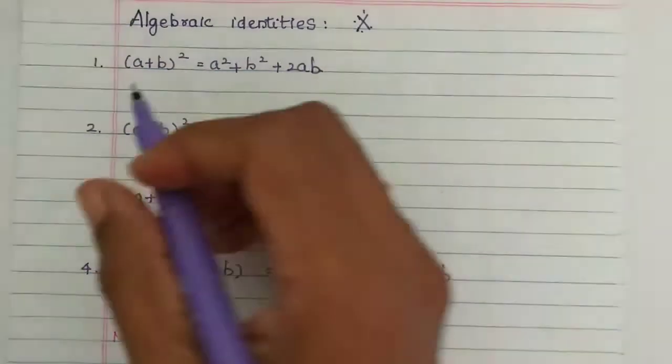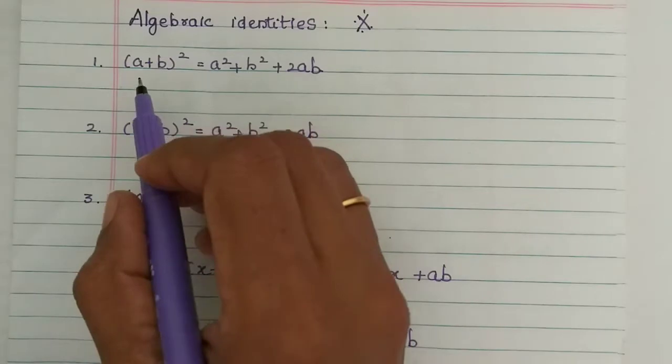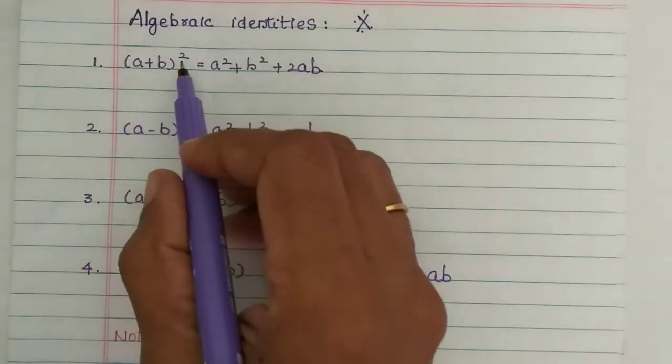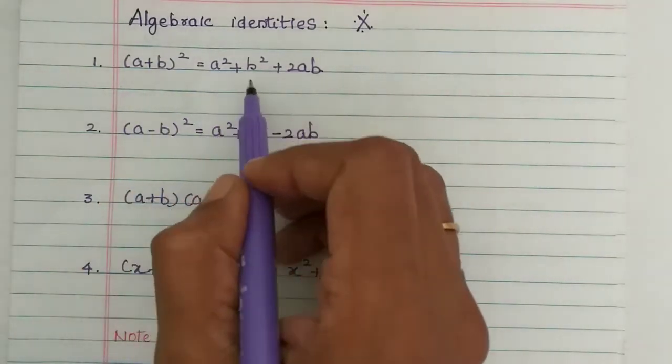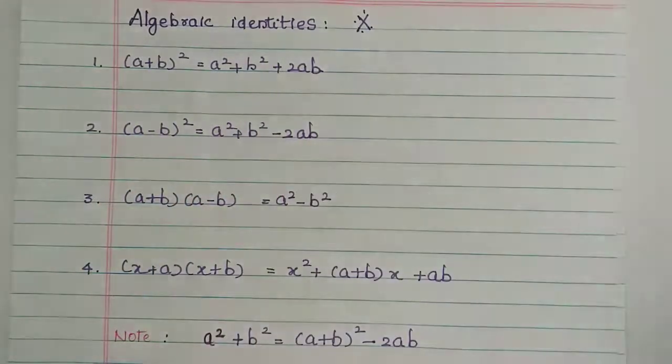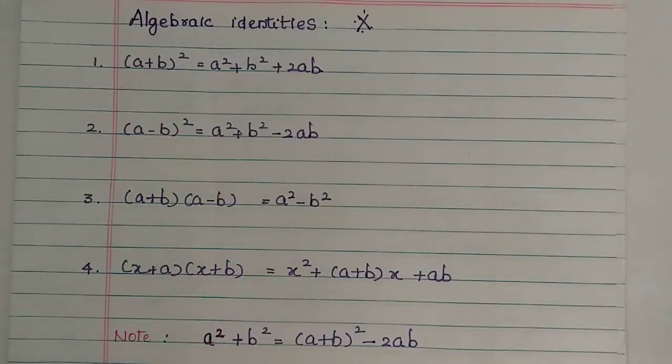Now, the first formula is: a plus b, the whole squared, which is equal to a squared plus b squared plus 2ab. This is the first formula.